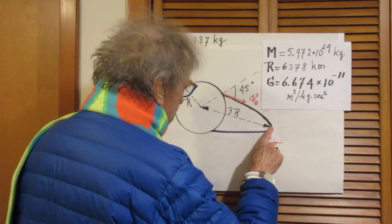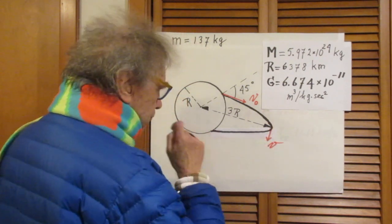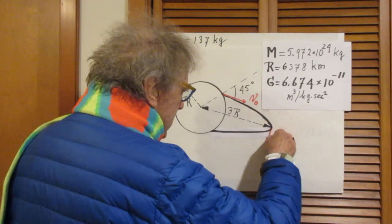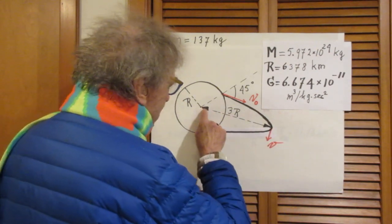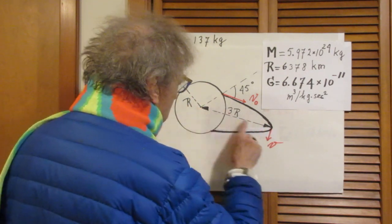This point is called the apogee. At the apogee, the speed is exactly perpendicular to the line that goes from here to there.